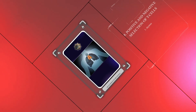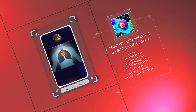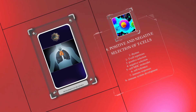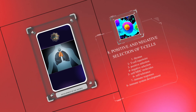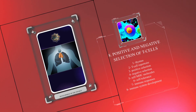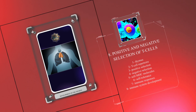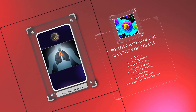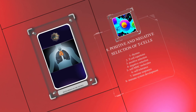In the thymus, the T-cell repertoire is formed through positive and negative selection. Positive selection supports T-cells that recognize self-MHC molecules, while negative selection eliminates those that fail to interact with self-MHC. This balance ensures self-tolerance and effective immune responses, and a detailed understanding of these processes aids in immune system development.